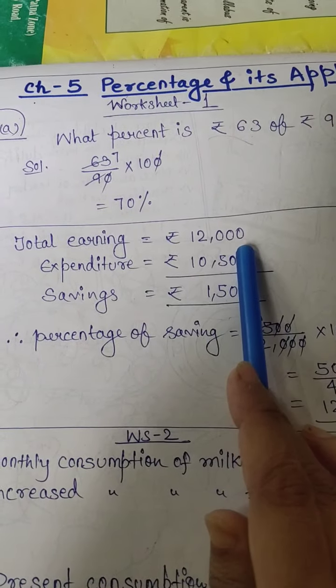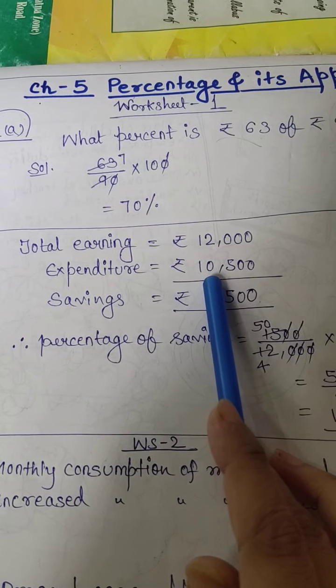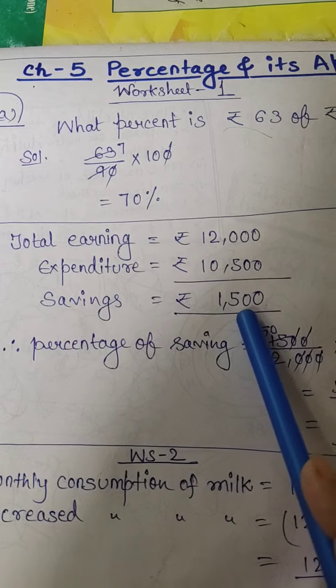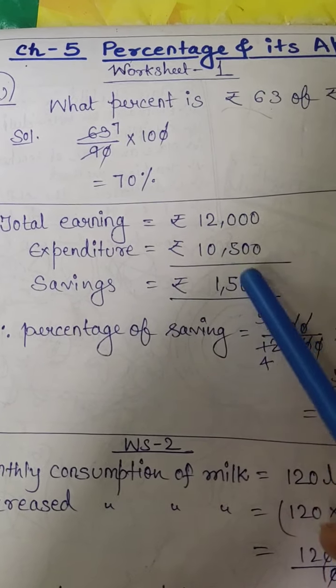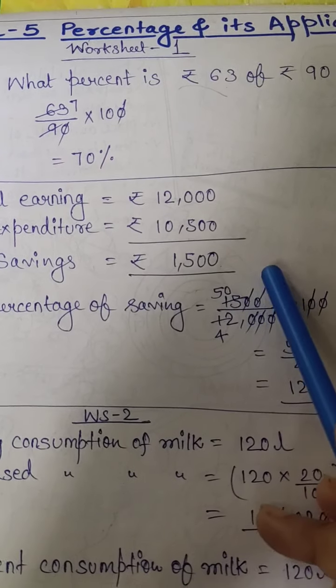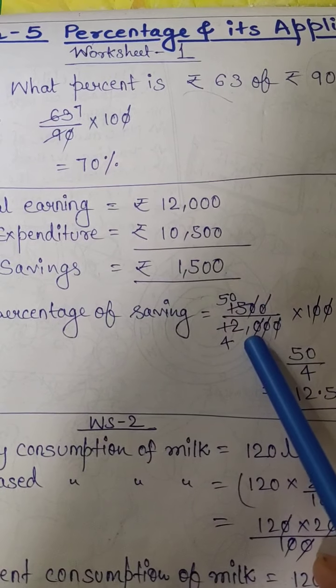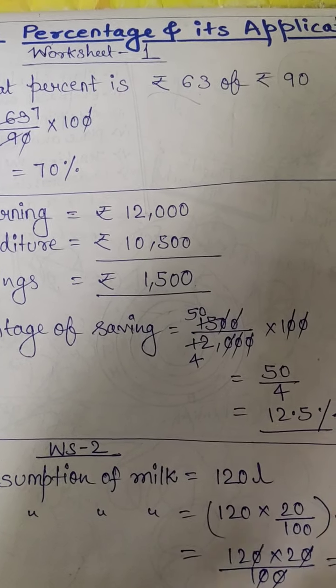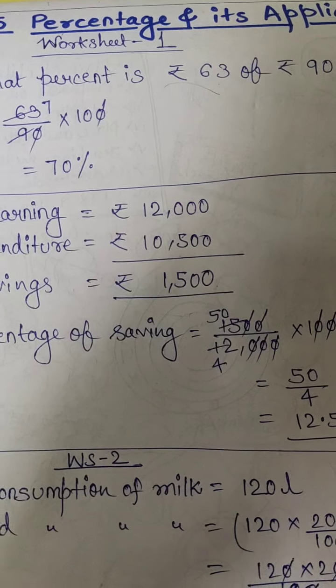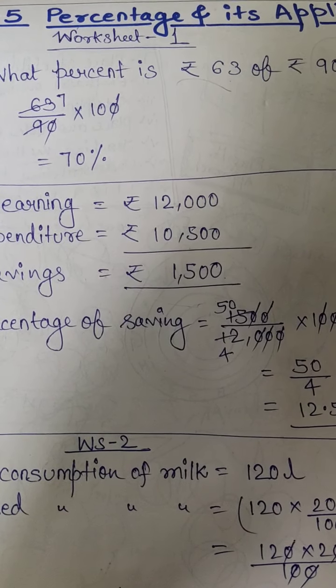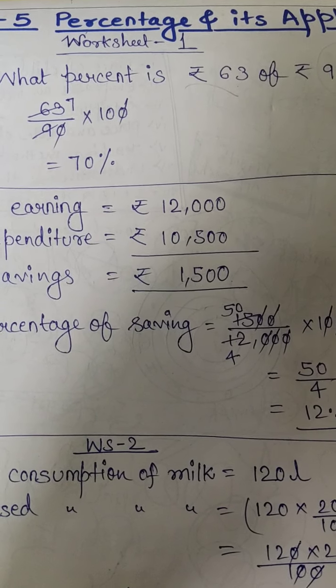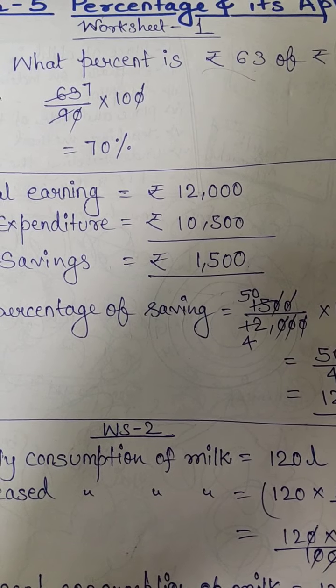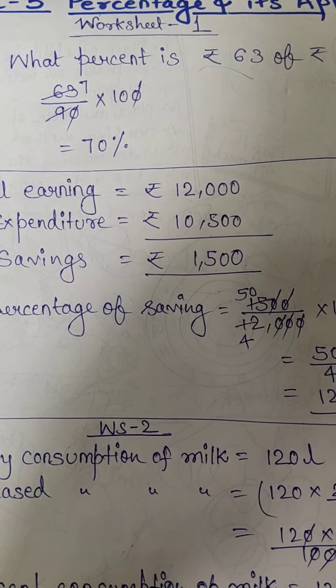Let's see how. So total earnings 12,000, expenditure rupees 10,500. Saving will be 1,500 rupees. After subtracting this you will get the savings. Now percentage of saving: 1,500 by 12,000 into 100. So simply you will get answer 12.5 percent. In the same way you have to solve all the questions of worksheet 1. That is very easy students. I think all of you can do that. But if you have any problem then we will sort out those problems in our zoom classes.